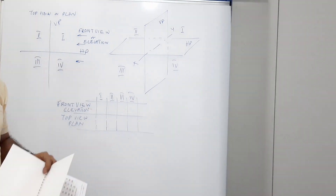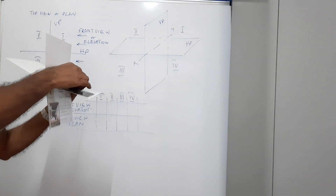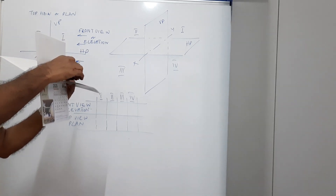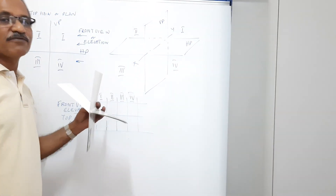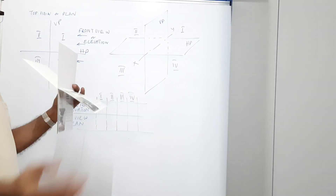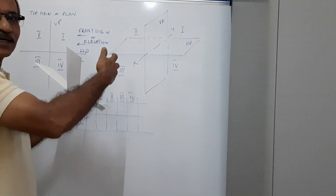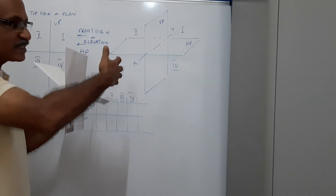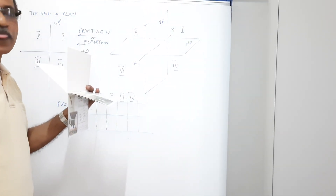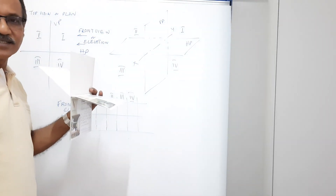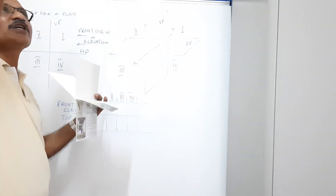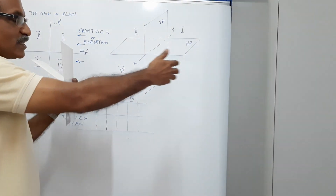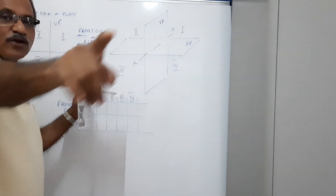Let us see what happens when an object is situated in the first quadrant — it can be on HP, in space, or on VP. You are in your reference position. You come to the front and view the object; the parallel light rays make an impression on the VP — that is the front view or elevation. Then you go up, look from an infinitely large height with parallel rays, and project the top view onto the HP. Then you come back to the reference position. You have drawn the elevation on VP and the plan on HP.